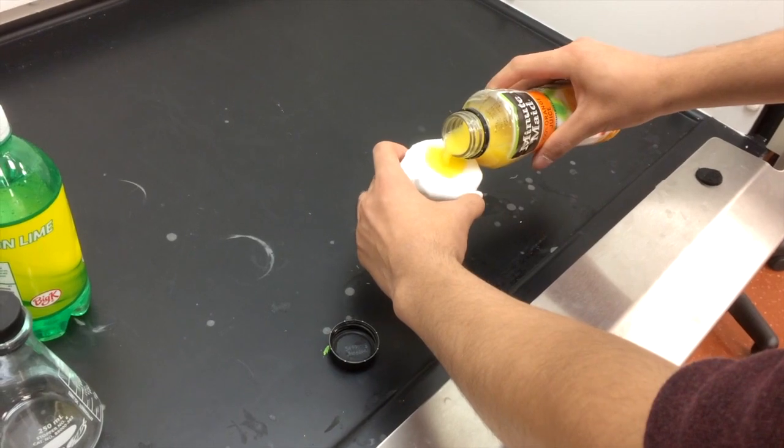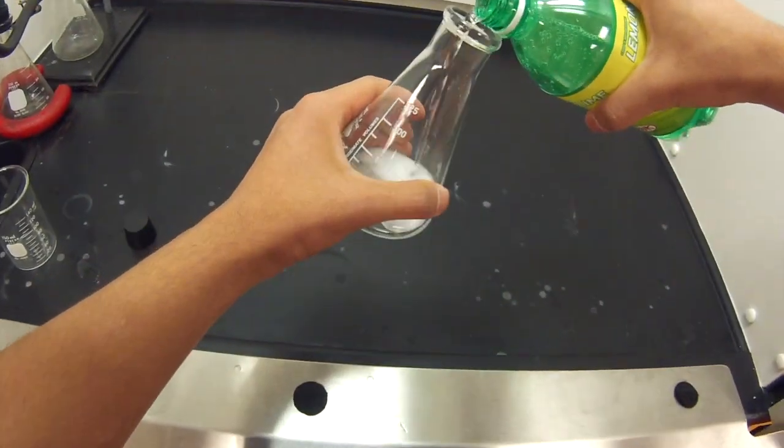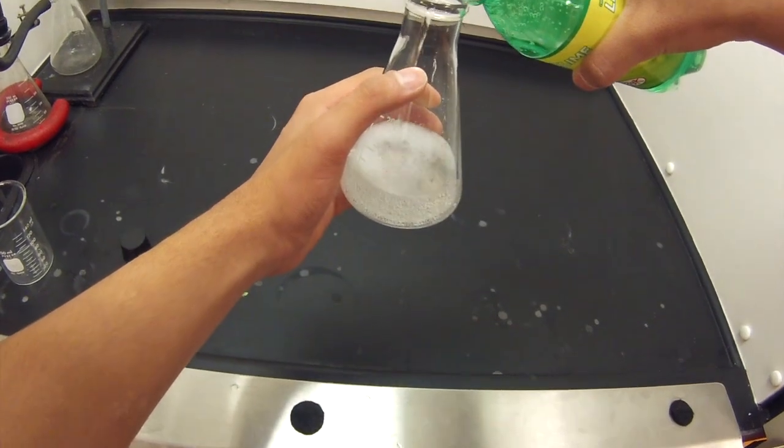Use a piece of cheesecloth to strain any solids from your sample, or use an Erlenmeyer flask and a stopper to remove any carbonation from your sample. Set these aside.